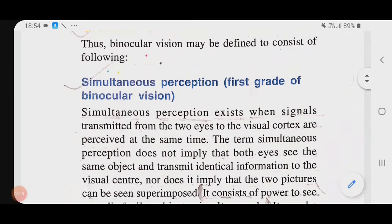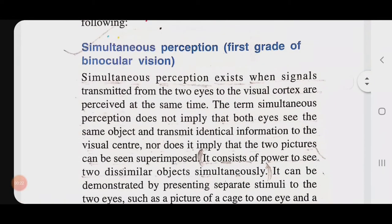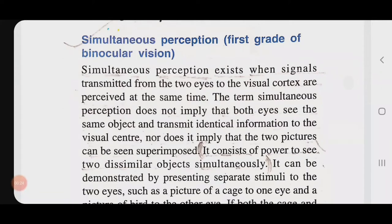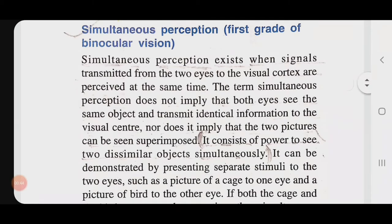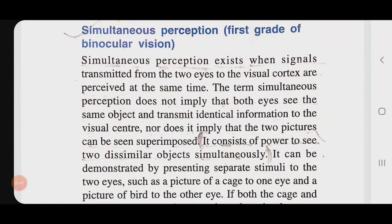Simultaneous perception exists when signals transmitted from the two eyes to the visual cortex are perceived at the same time. This means we are seeing two dissimilar objects, one from each eye, at the same time. If the visual stimulus is dissimilar and we see those objects simultaneously, then it is called simultaneous perception. It consists of the power to see two dissimilar objects simultaneously.